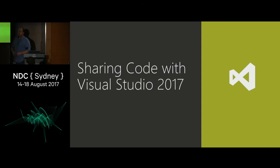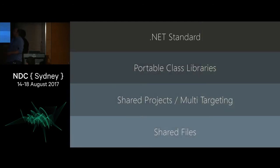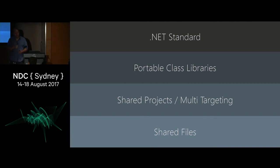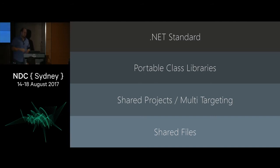There are some new options in VS 2017 around how we can share code across more platforms. The obvious example is .NET Standard. My general approach: I want to use .NET Standard if I can and work my way down. Portable class libraries have been around for a while, but with the release of .NET Standard 2, Microsoft is officially deprecating them as an approach to sharing code. Multi-targeting is a new toolset that came out with VS 2017. And shared files has been around since Visual Studio started, with its pros and cons.